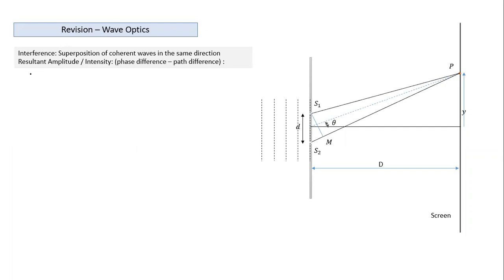When coherent waves travel in the same direction, both waves have the same value of omega, so the resultant oscillation at a point where two waves meet also has the same angular frequency. What matters is the amplitude — the resultant amplitude is the phasor sum. We need to find the path difference and the resulting phase difference, as seen in wave motion, to determine the resultant amplitude and intensity.